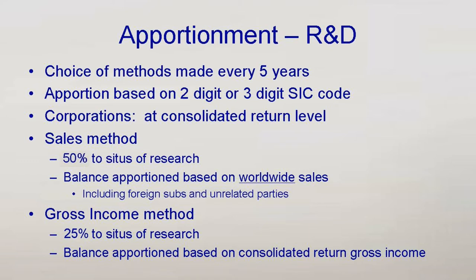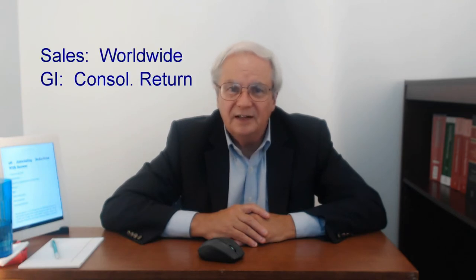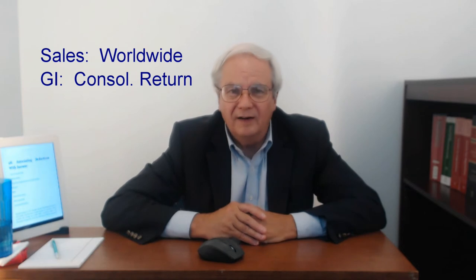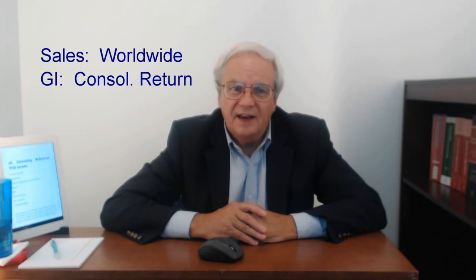Under each method, part of the R&D is allocated to where the R&D is done, and the rest is apportioned based on amounts in the basket to total amounts. For the sales method, sales includes all sales of the worldwide group plus sales of unrelated parties benefiting from the R&D. For the gross income method, the amounts only include what's on the consolidated return. The choice between these two methods can result in significant differences in foreign source taxable income. There are also special rules for carving out certain R&D and allocating those costs to specific jurisdictions.